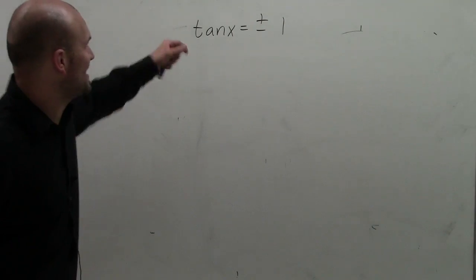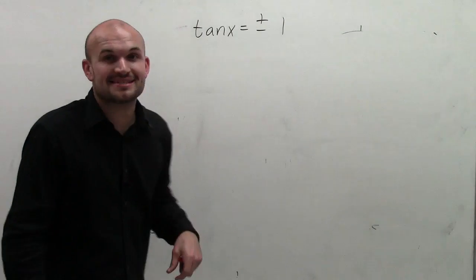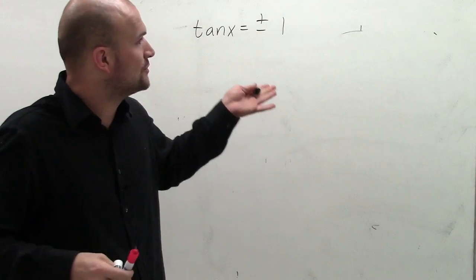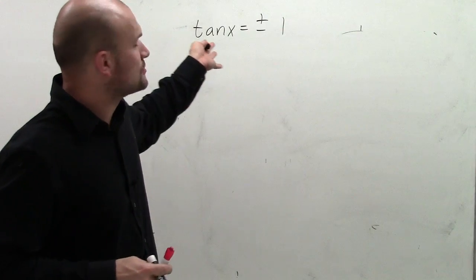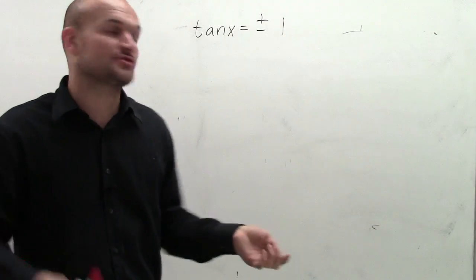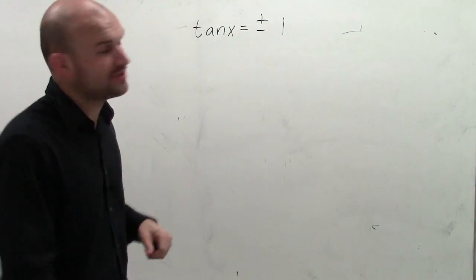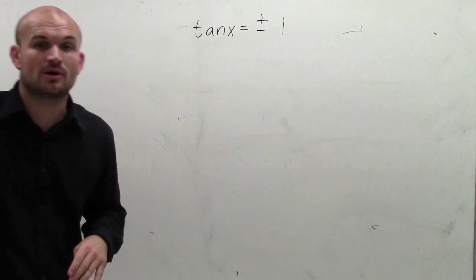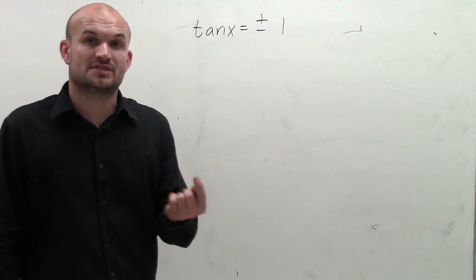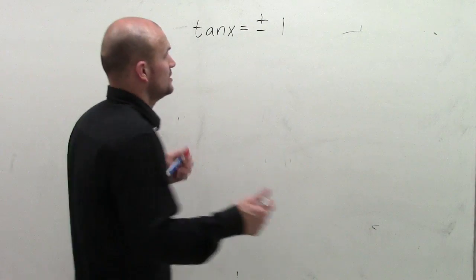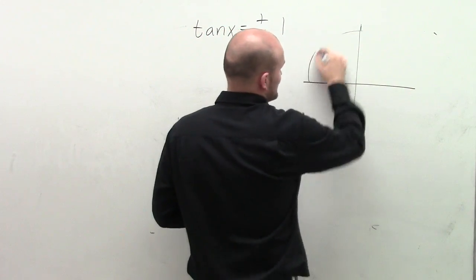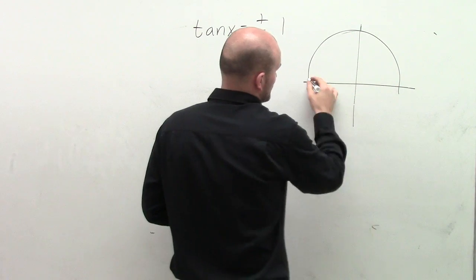Hello. So what we have is tangent of x equals plus or minus 1. What I want to do is show you how to write all of the solutions for tangent equals plus or minus 1, and not only just the solutions on an interval of 0 to 2 pi. So the first thing we want to do is actually just find all the solutions on the interval of 0 and 2 pi.